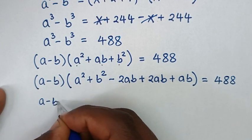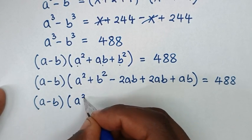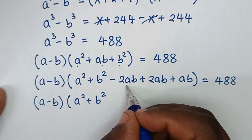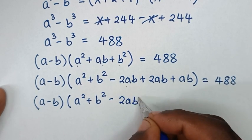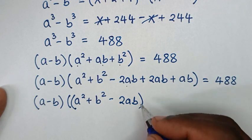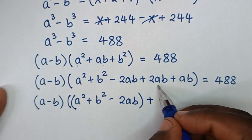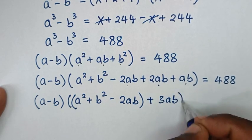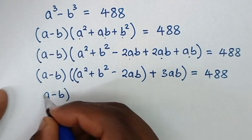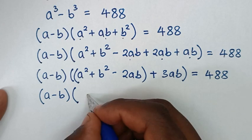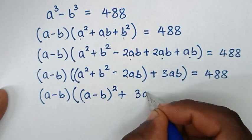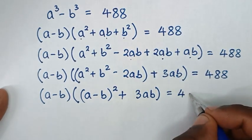So it will be (a minus b) times [(a minus b)² plus 3ab] equals 488. Here a² + b² − 2ab is the same as (a − b)², so the expression becomes (a − b) times [(a − b)² + 3ab] equals 488.